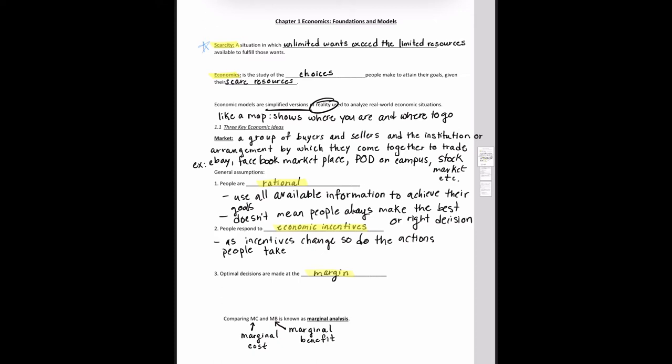Finally, optimal decisions are made at the margin. Usually decisions aren't always all or nothing. A lot of decisions involve a little bit more of one thing or a little bit less of another thing, right? My example for this is, it's 2am, should you watch another episode or go to bed?